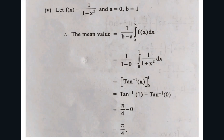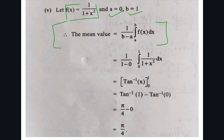Moving on to the next problem. We are again calculating mean value using the formula 1/(b−a) times the integral from a to b of f(x) dx. The function given is f(x) = 1/(1+x²), with a = 0 and b = 1. In place of f(x), substitute the given function 1/(1+x²); b = 1 and a = 0.